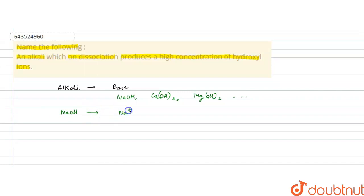NaOH when dissociates will give Na plus and OH minus ions. Similarly calcium hydroxide when it dissociates will give calcium 2 plus and hydroxide ions.